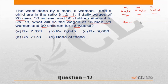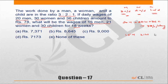The second piece of data: 20 men, 30 women, and 36 children together are paid rupees 78 per day. We need to find what will be the wages for 15 men, 21 women, and 30 children for 18 weeks.